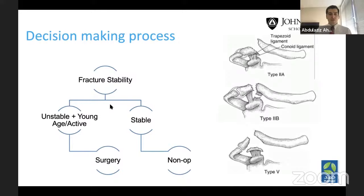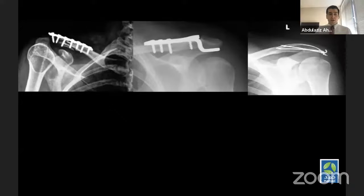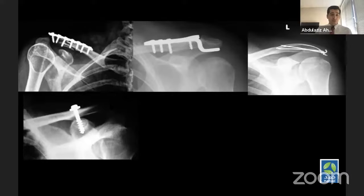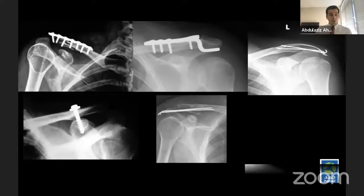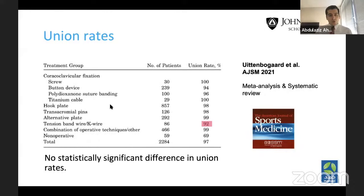There are numerous surgical treatment options described in the literature: pre-contoured or reconstruction locking plates, hook plates, tension band with K-wires, standalone screws, CC screws, pins across the fracture from the acromion, and intramedullary screws. Looking at union rates in one recent meta-analysis, most fixation methods show no statistical difference, except tension band and K-wiring, which had a relatively lower union rate of 92%. So the problem with these fractures surgically is not the union rate — it's the complication rate.